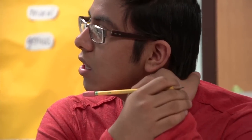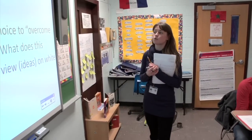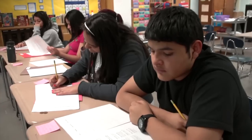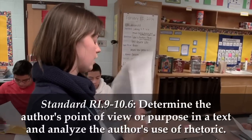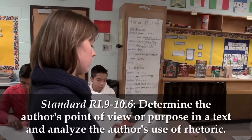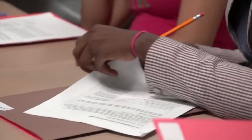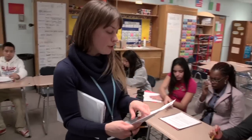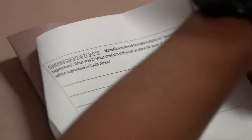Once the review is complete, it's time to begin today's close reading of the text. Our guiding question for the day: Mandela was forced to make a choice to overcome white supremacy — what was it? What does this choice tell us about his point of view on white supremacy in South Africa? We are focusing on Reading for Craft and Structure. In the second close read, you will answer questions about craft and structure, work with a partner on the supplementary questions, and then complete the response to the guiding questions.